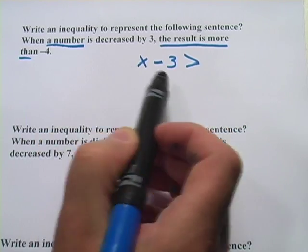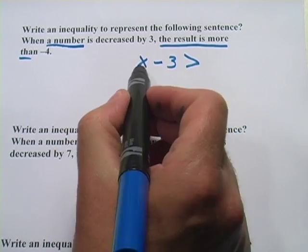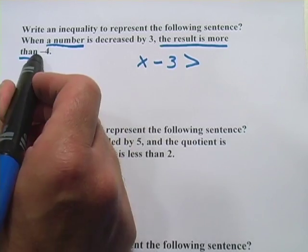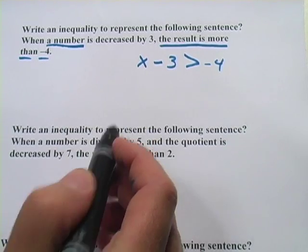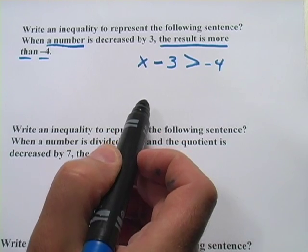So, so far, when a number is decreased by 3, the result is more than, so x minus 3 is greater than, and then we've just got negative 4. So that is how to translate that sentence into an inequality.